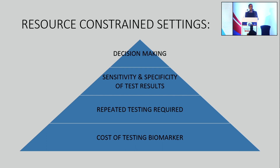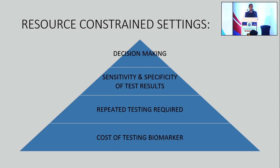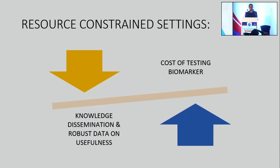Lastly, we need to understand that our decisions need to be based on the results. It cannot be a theoretical estimation of the biomarker in the urine or blood that will inform the disease trajectory — the decision-making should be based on the actual results of the biomarker. So these are all the challenges, and to the best of it, I would say the most critical is the cost of biomarker testing.